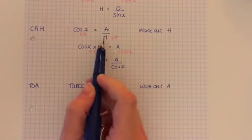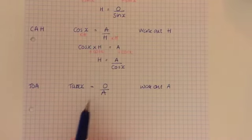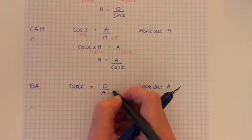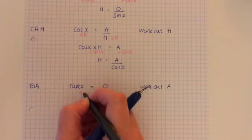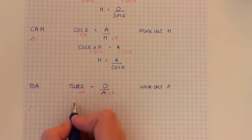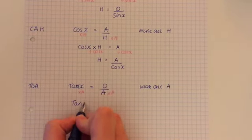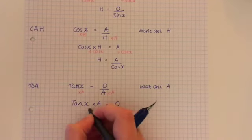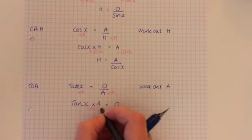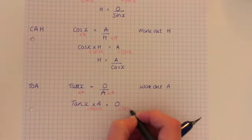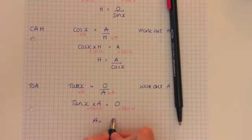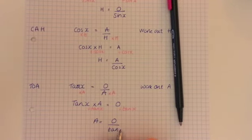So it's whenever you're working out the denominator, that's when you're allowed to use that trick. But I'm doing it properly. So I multiply by A on each side. So tan X multiplied by A equals O and then I divide each side by tan X. So A equals O over tan X.